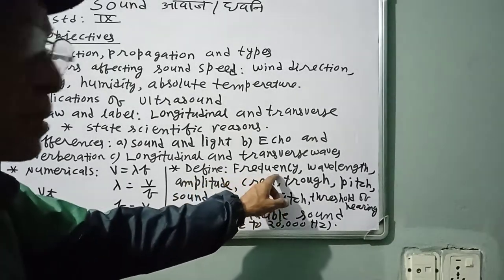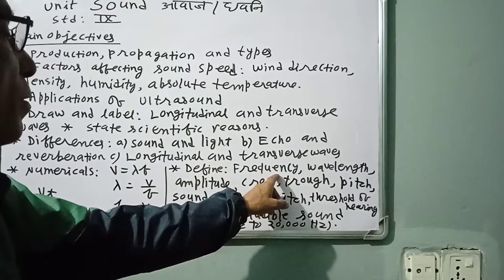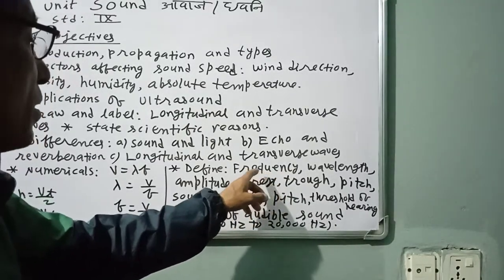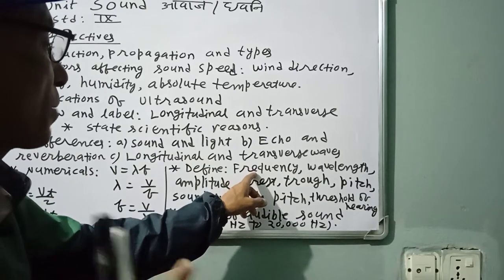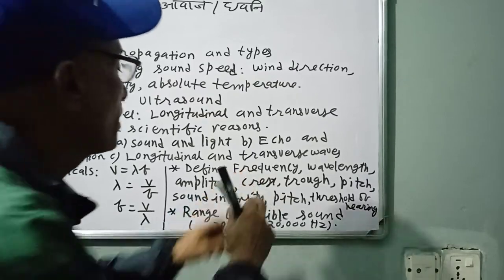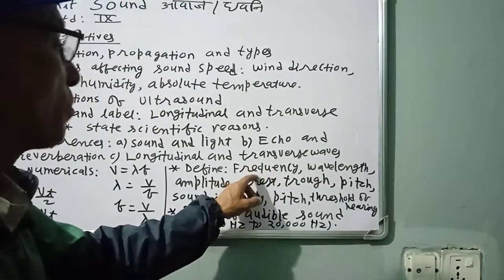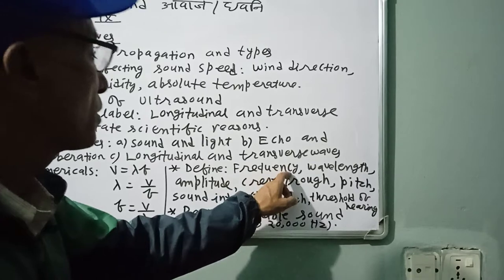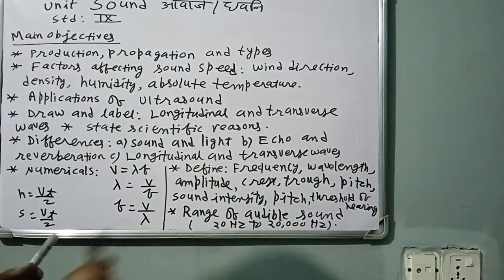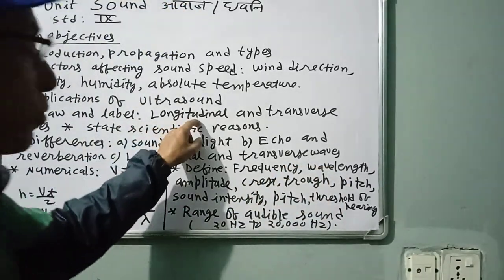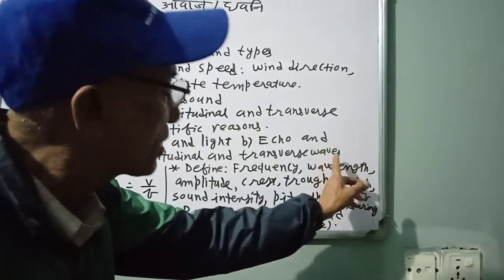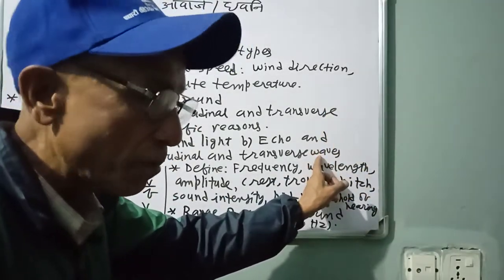Define frequency: frequency means the number of complete vibrations made by a body per second — for example, 96.6 megahertz or 90 megahertz. Wavelength has two definitions: in case of a longitudinal wave, wavelength is the distance between two successive compressions or two successive rarefactions.